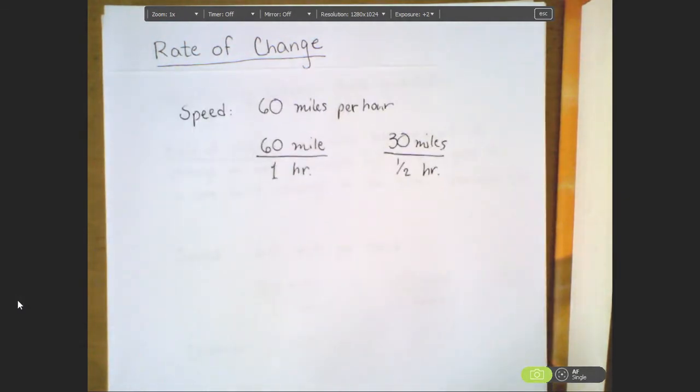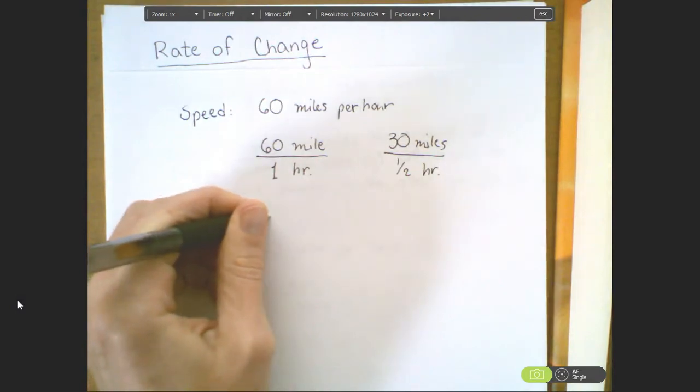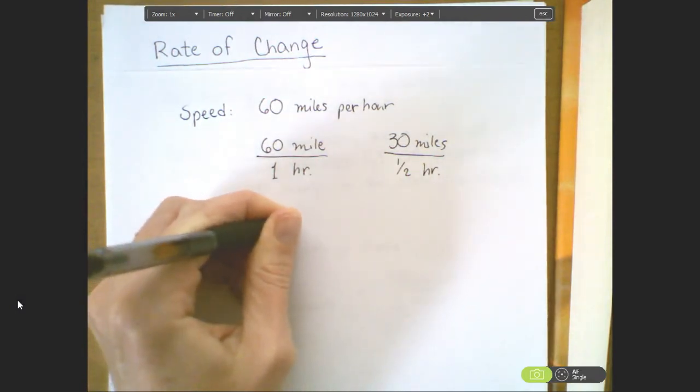Another common rate of change we could talk about is that of maybe gas efficiency. We could say that our tank goes 33 miles per gallon.